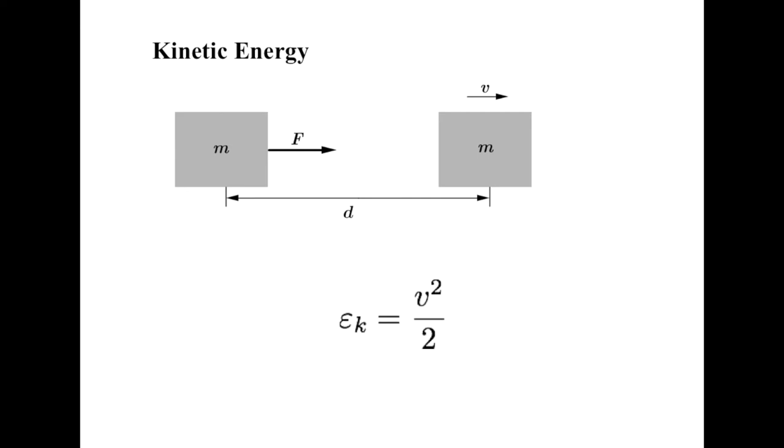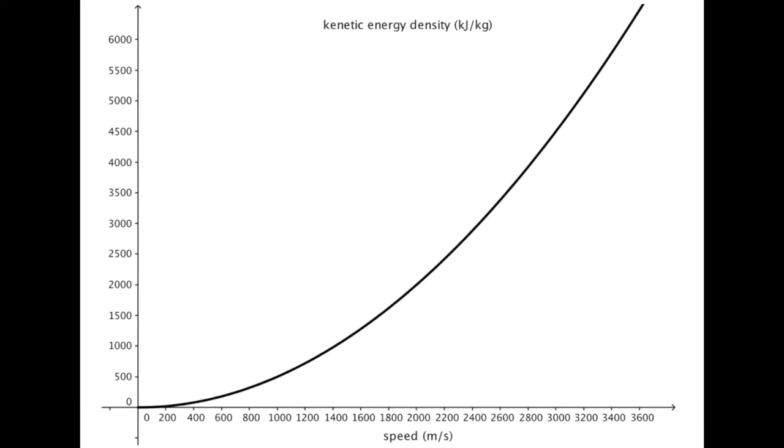The key to the Oberth effect is the square on the speed. This is a graph of the kinetic energy density in kilojoules per kilogram as a function of speed in meters per second. As you can see, it isn't linear. The curve just keeps getting steeper as we move from left to right. Let's examine it more closely by looking at some specific examples.